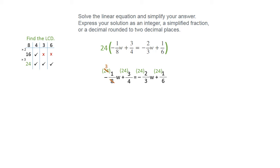So 8 goes into 24 three times. 4 goes into 24 six times. 3 goes into 24 eight times. And 6 goes into 24 four times. Then you're just going to write an equation that shows what's left — you don't have any denominators anymore, so you're just going to multiply what you have and make those terms.